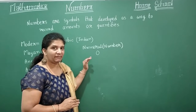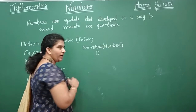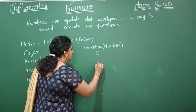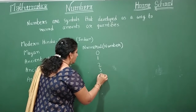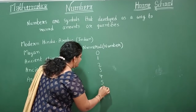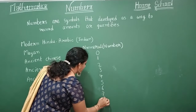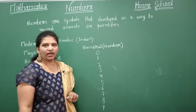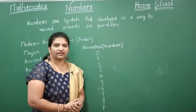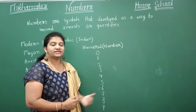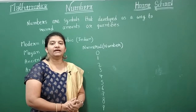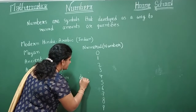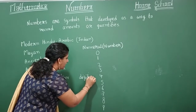So what are the 10 symbols? They are: 0, 1, 2, 3, 4, 5, 6, 7, 8, and 9. These 10 symbols are called digits.